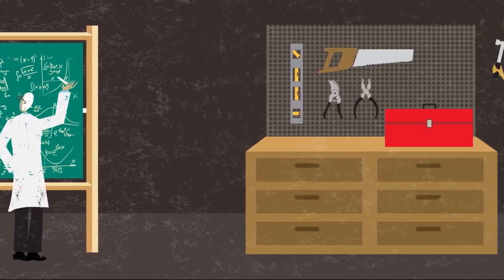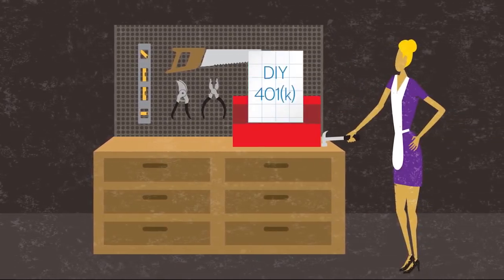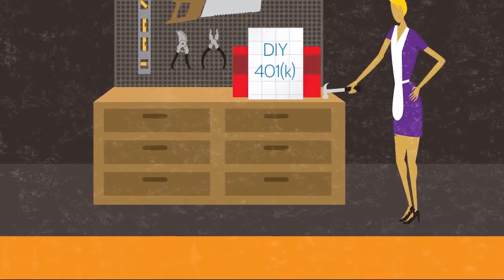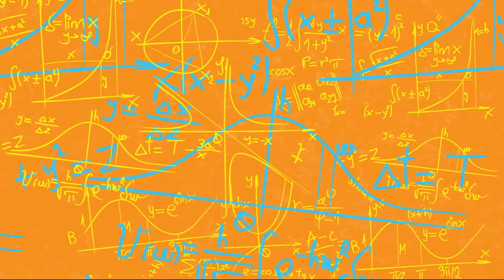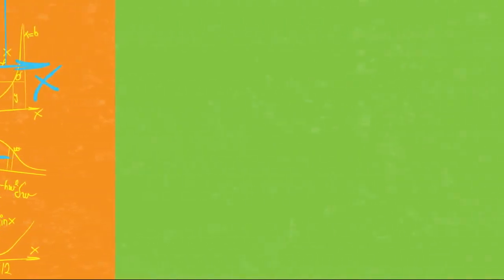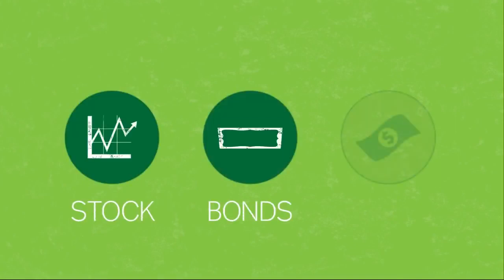And if you're the do-it-yourself type, you need to understand how to invest appropriately. Don't worry, we're not going to show you tons of math. All you need to know to get started is that there are three big types of investments called asset classes: stock, bonds, and cash.